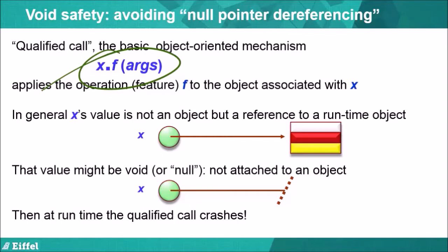Void is more the Eiffel terminology. And so if the reference is void, then there is no object, and there's of course no way the execution can carry out the operation x.f, because there is no object to apply f to. What's going to happen is an exception — the call will crash, and usually the exception will cause the entire program execution to crash as well. So this is a constant danger which hangs over our heads when executing an object-oriented program. In ordinary approaches to programming, there is no protection against that danger. Such a protection is what Eiffel's void safety provides.